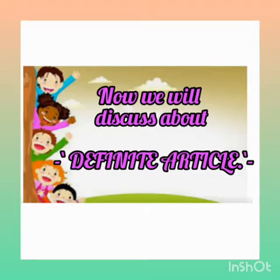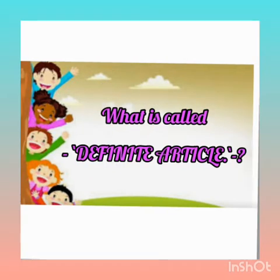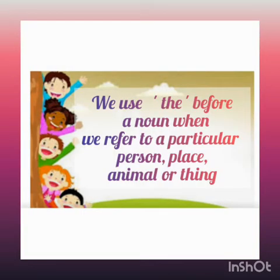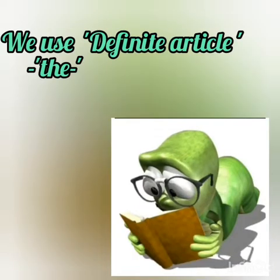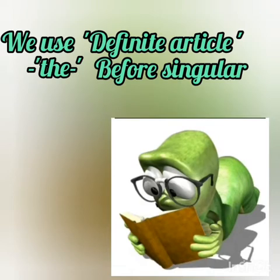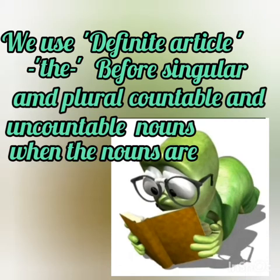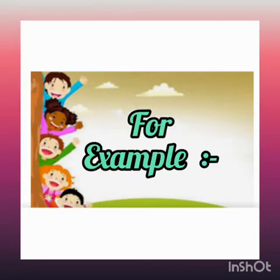Now we will discuss about the definite article. What is called the definite article? The article 'the' is called the definite article. We use 'the' before a noun when we refer to a particular person, place, animal or thing. We use the definite article 'the' before singular and plural countable and uncountable nouns when the nouns are particular or specific.